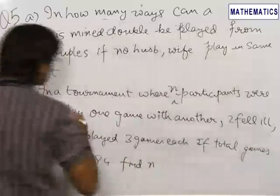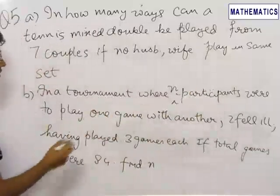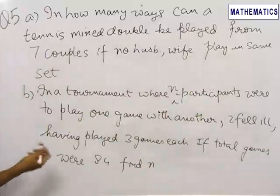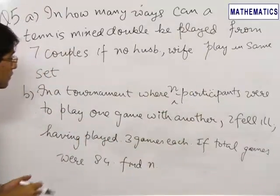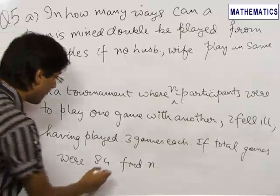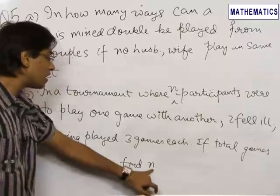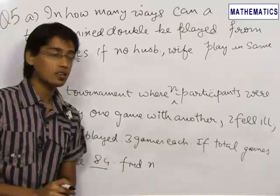And in question 2, we have in a tournament where n participants were to play one game with another, two of the participants fell ill, having played three games each. If the total number of games played at the end of the tournament were 84, we need to find the total number of participants before the tournament started, that is the value of n.